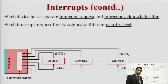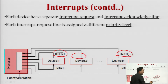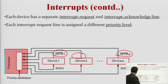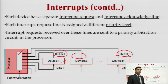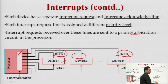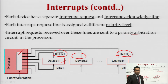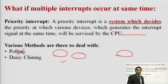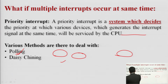When we talk about various devices, all devices carry their own signal line. If there are N devices, N signals are there, and the processor is notified which device is generating a signal. Each device has its own priority level, and priority arbitration — similar to bus arbitration — determines which device gets access. The working is the same as polling and daisy chaining.